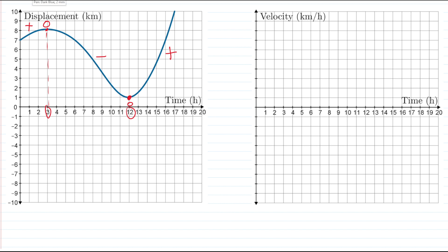So on our velocity graph, I'm going to go to three hours, and 12 hours. And I'm just going to put a point at zero, which represents a velocity of zero, kilometers per hour.